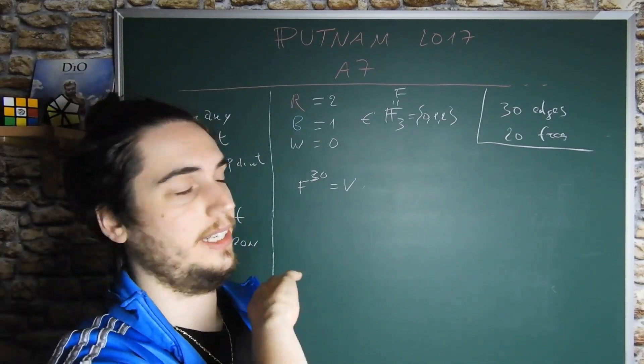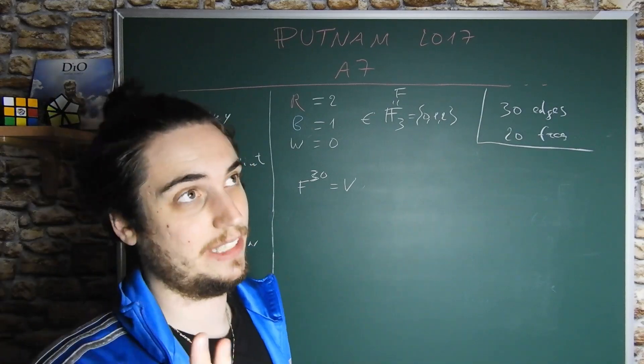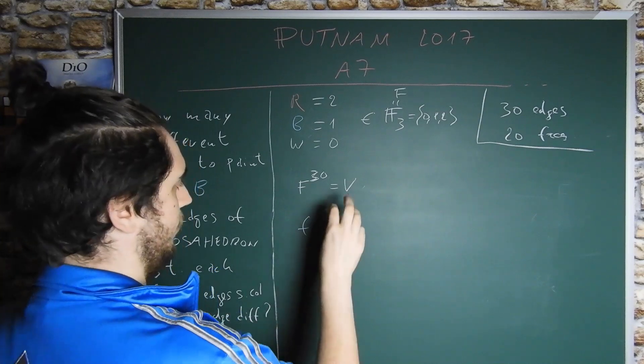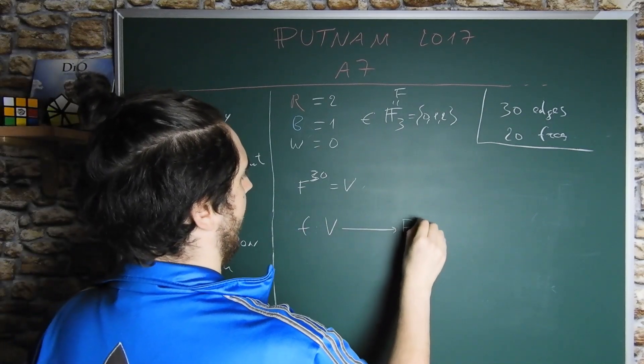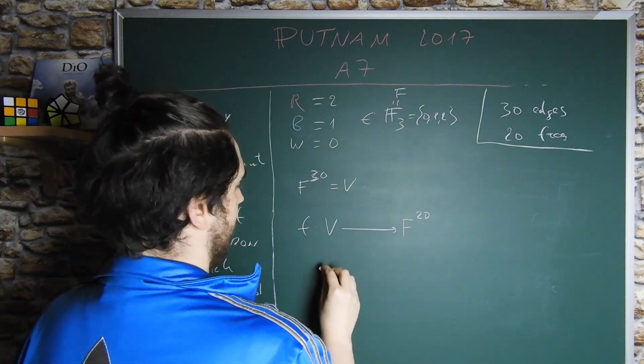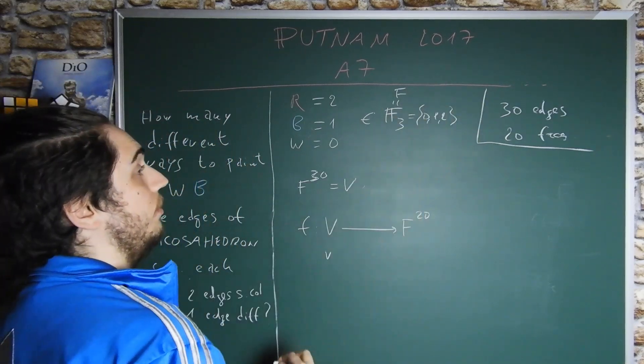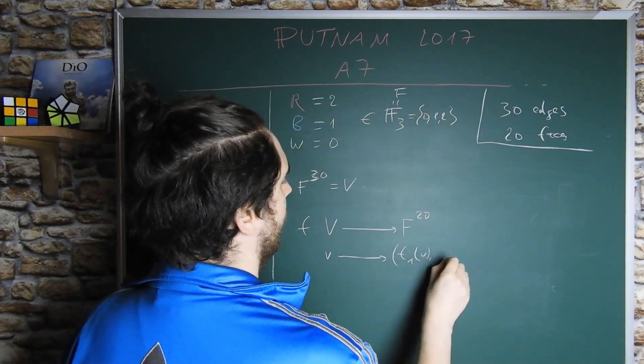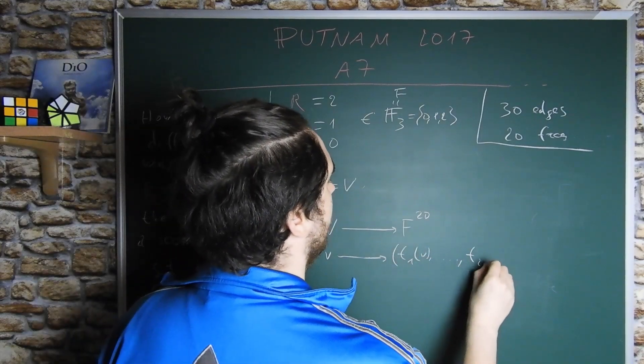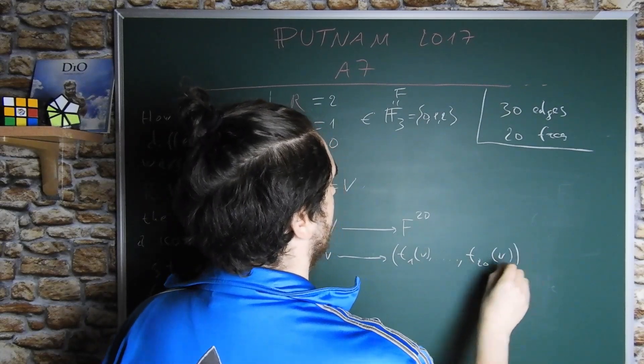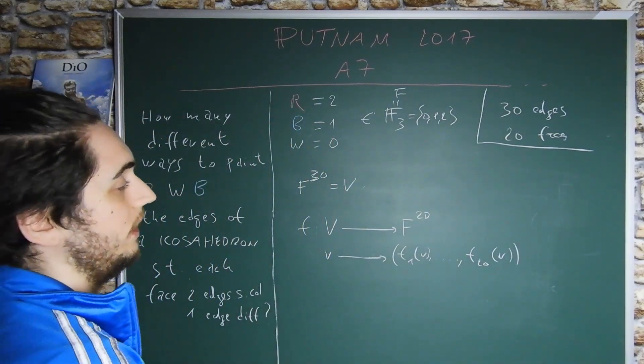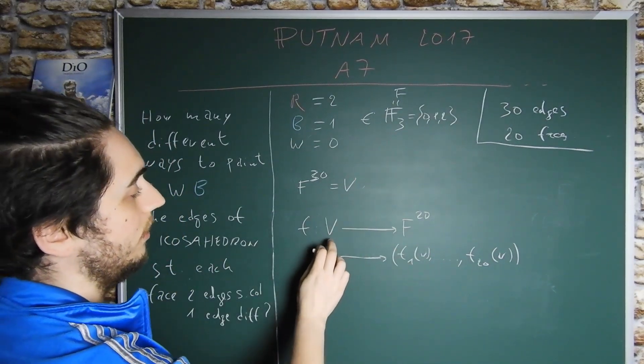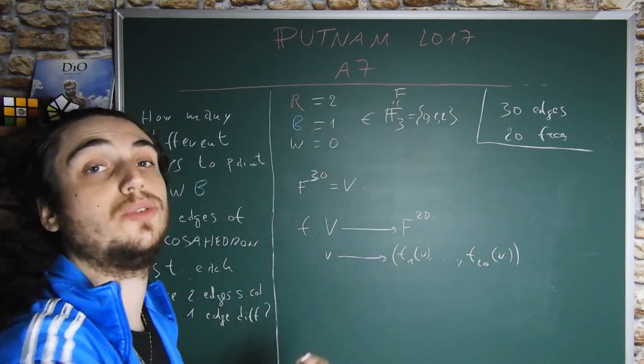We can glue them to form the more natural function F, which goes from V to F to the 20, such that to every possible coloring of edges it gives us F1 of V up to F20 of V. So this is a linear map from a vector space over F of dimension 30 to a vector space over F of dimension 20.